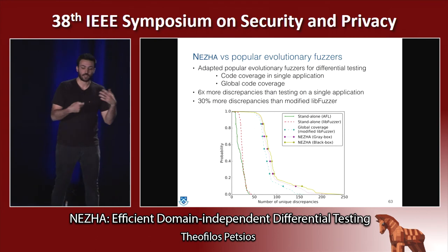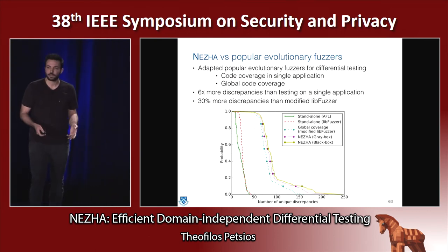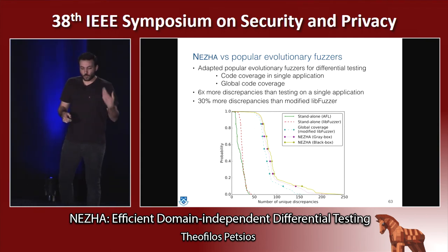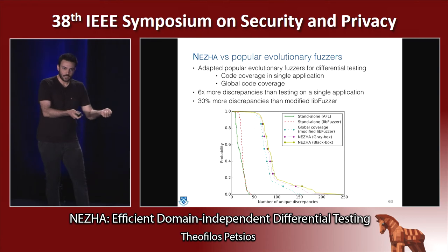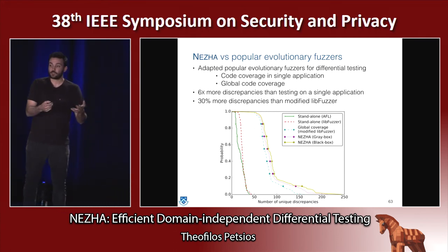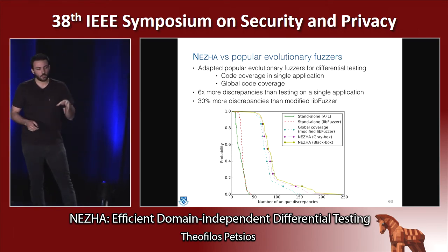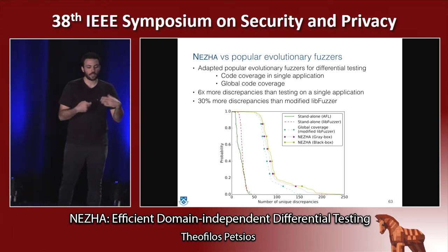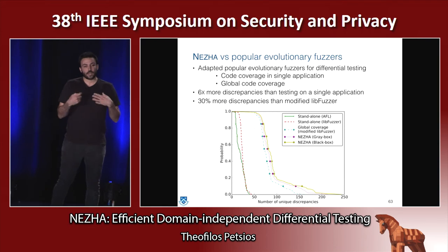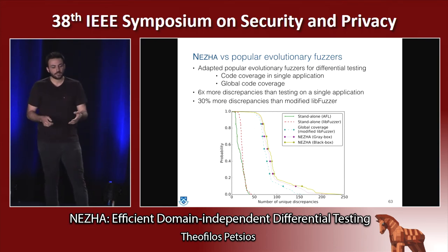One could ask how this compares to modern fuzzers like AFL or LibFuzzer. There are two possible cases: one where you fuzz a single application and then provide those inputs to all other programs for differential testing, and another where you adjust LibFuzzer or AFL to account for global code coverage. We show that in the first case — fuzzing only a single application — if we use delta diversity as our guidance we can trigger six times more discrepancies. Whereas if we account for global code coverage, we still yield 30 percent more discrepancies on the same number of trials.